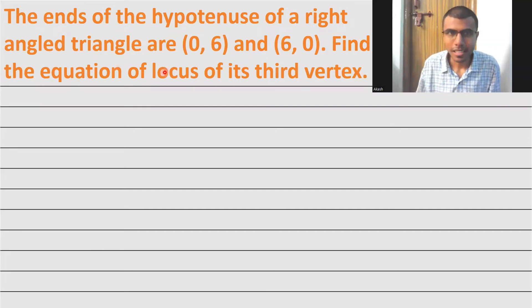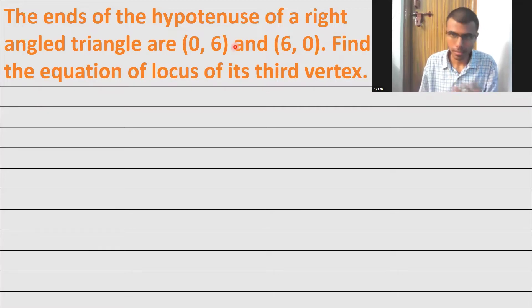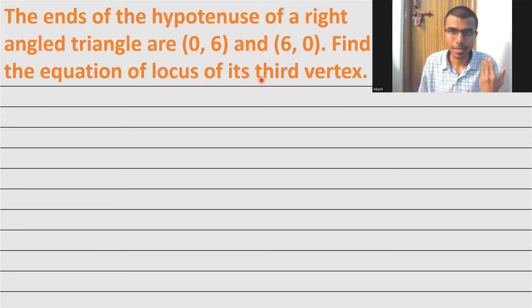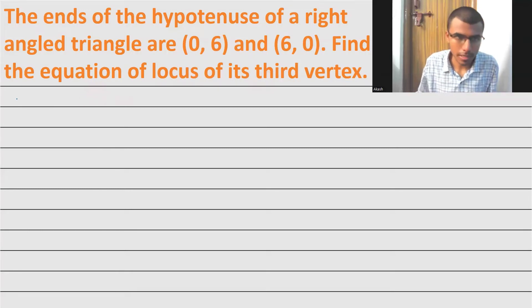Hello learners. Here we are given that the ends of the hypotenuse are (0,6) and (6,0). We have to find the equation of the locus of its third vertex. I'm going to take the third vertex as (h, k).